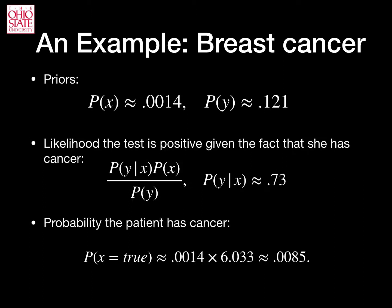We already know p of y given x, which is 0.73. But how about p of y? This prior specifies the probability of a test, like a mammogram, being positive whether the patient has cancer or not — it includes true and false positives. For a 40-year-old woman, this is approximately 12.1%. Hence, using our equation, we have 0.73 over 0.121, which is approximately 6. Thus, our patient has a probability of 0.0014 times 6, which is approximately 0.0085. As you can see, this is a really small probability.